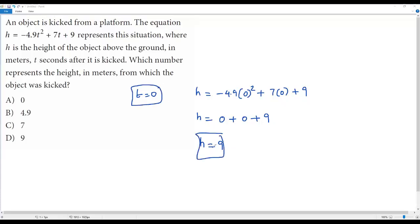When t = 0, I am getting h = 9. t = 0 means the initial time, that means when the object was not kicked yet. At that time we get h = 9, so 9 meters is the initial height from which the object was kicked. The correct answer choice is option D.